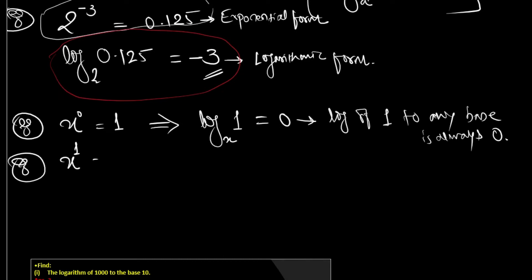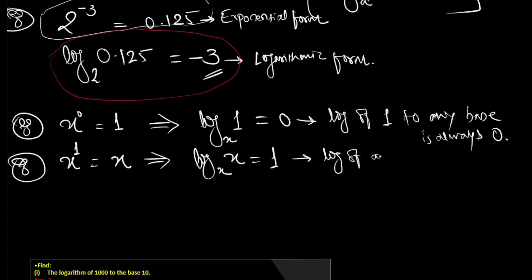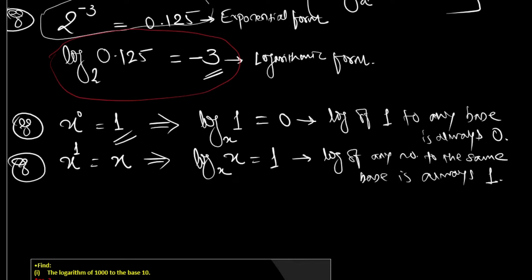x raised to 1 is equal to x — and converting this gives log of x to the base x is equal to 1. We can generalize: log of any number to the same base is always 1. These are laws of indices converted into laws of logarithm.